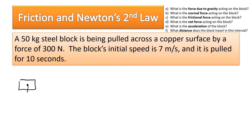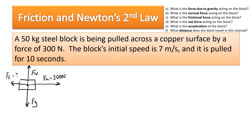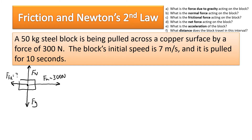It's a horizontal surface. The weight — the force due to gravity — is balanced out by the normal force, since those are the only two forces in the vertical Y direction. There's an applied force of 300 Newtons. There's also a frictional force. Since the block is already moving, it's kinetic friction, and the surfaces are copper and steel, which gives us the coefficient.